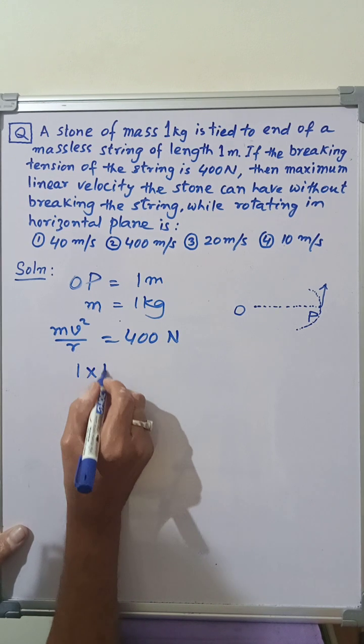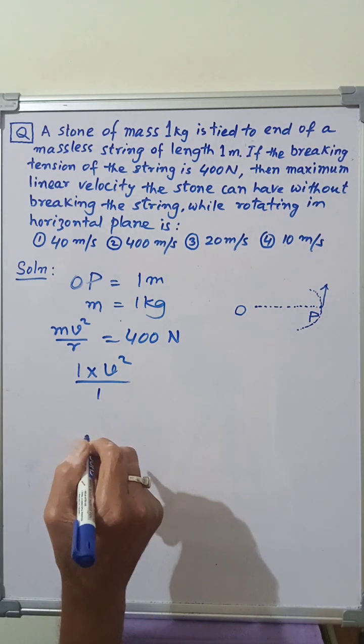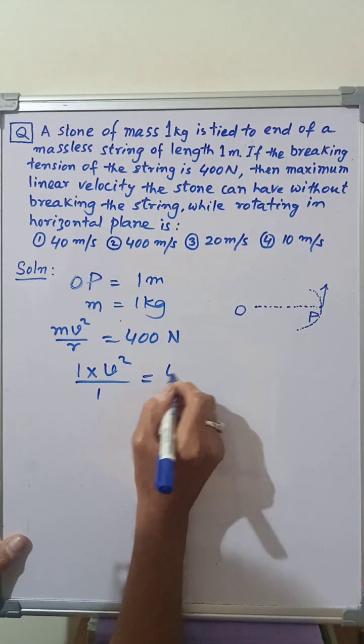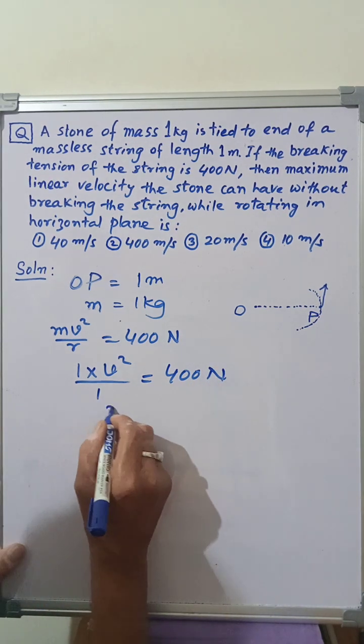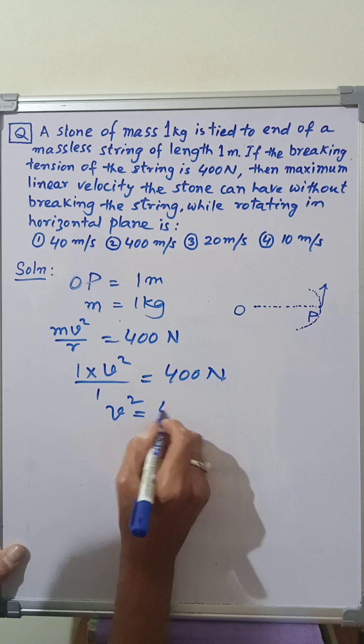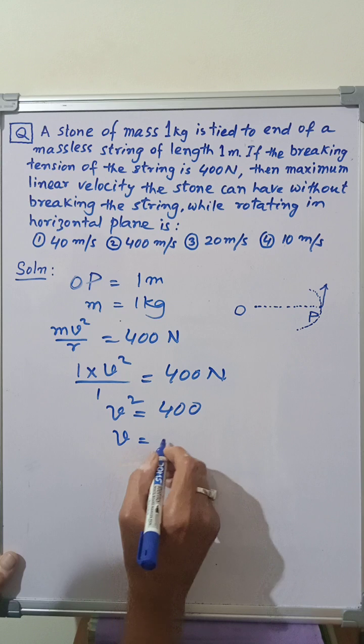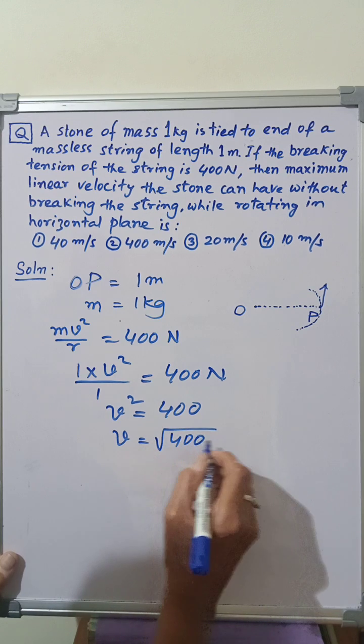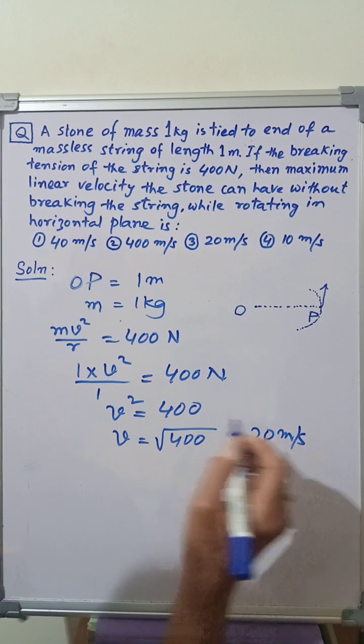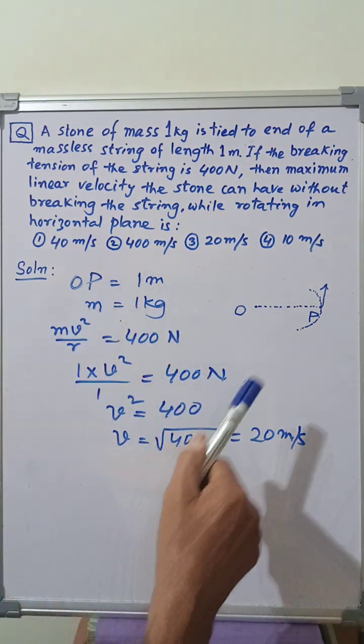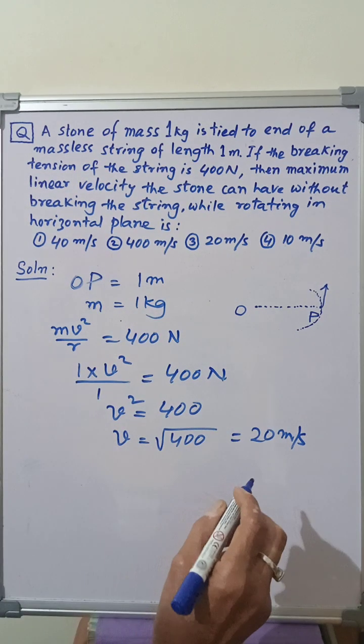V square is equal to 400. Therefore, V is equal to square root of 400, which is 20 m/s, the speed of the stone in the circular path, which is the answer to the question.